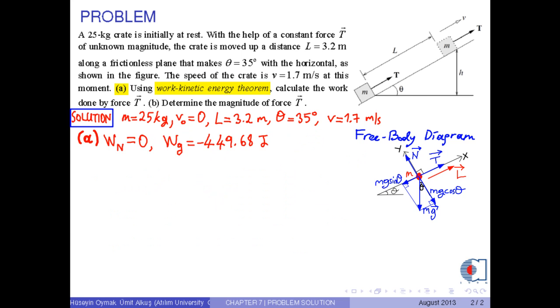Now we use the work kinetic energy theorem, that is, total work equals delta K, where delta K is the change in kinetic energy, which is equal to 1 over 2 times M times V squared minus V zero squared.